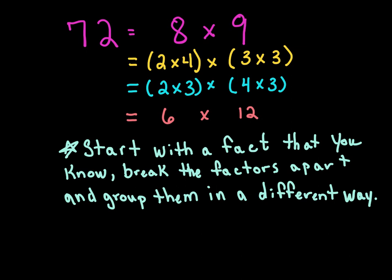When using the associative property, always start with the fact that you know, then break the factors apart, and group them in a different way. 72 equals 8 times 9 — that's a fact. Break up 8 as 2 times 4, and 9 as 3 times 3. You can take 2 times 4 times 3 times 3, then regroup: take the 2 and one 3 to get 6, and the 4 and other 3 to get 12. This shows another way of finding factors of 72 — using the associative property gives us 6 times 12, so 6 and 12 are also factors of 72.